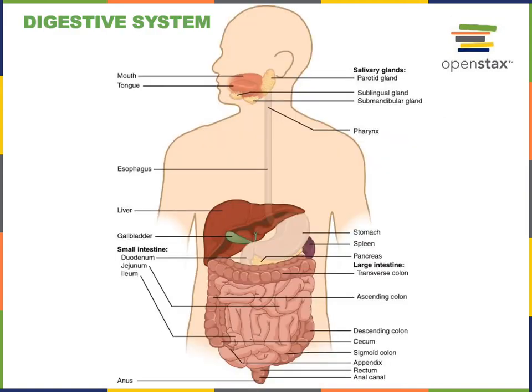The alimentary canal is a tube from the proximal opening of the mouth, the oral cavity, all the way down through to the distal opening of the anus. The contents inside of the alimentary canal are technically outside of the body, and nutrients get absorbed into the blood to be distributed throughout the body. The alimentary canal is also commonly referred to as the gastrointestinal tract, or just the GI tract.